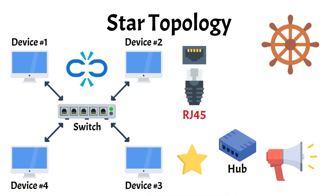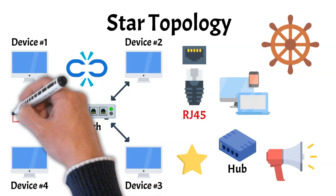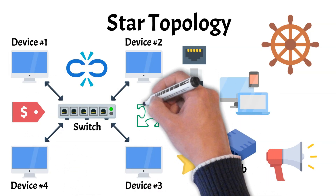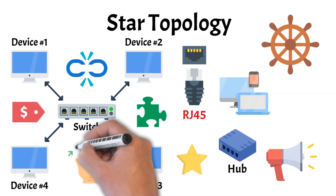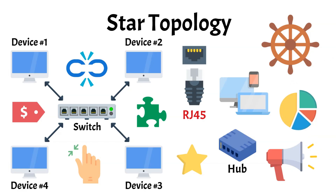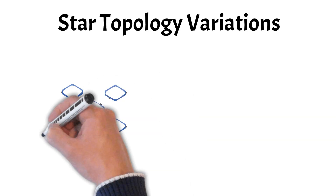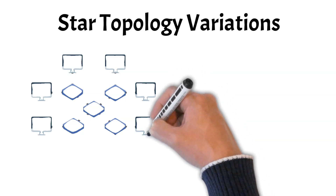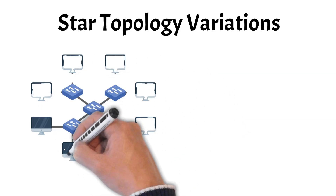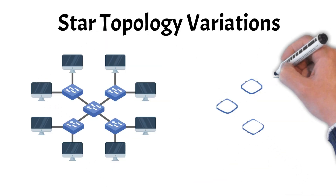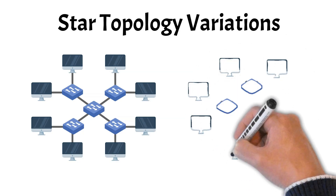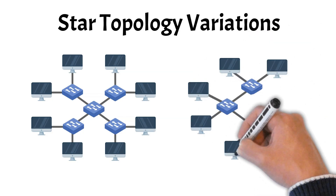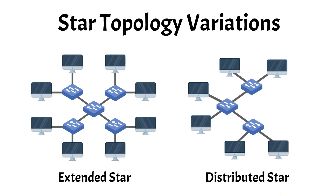But there's a downside. The central hub or switch is a single point of failure — if it goes down, the entire network stops working. Compared to a bus topology, star networks require more cabling, which increases cost, but the trade-off is better performance, easier troubleshooting, and great scalability. Because of these advantages, the star topology has become the most widely used design today. An extended star uses a single central switch that connects to several other switches, each serving a few devices, letting the network expand while keeping the layout organized. A distributed star connects multiple switches in a line, with each switch managing its own devices, so the failure of any single end switch only affects its local devices.